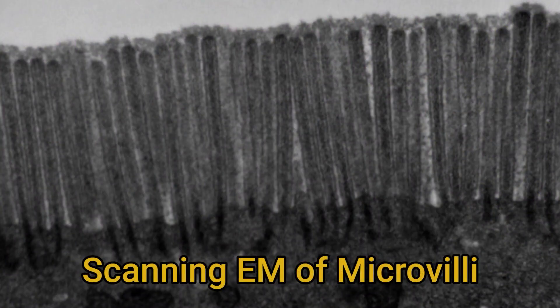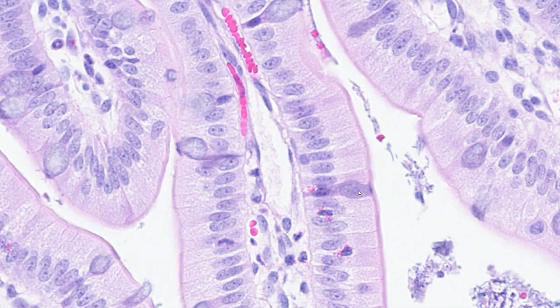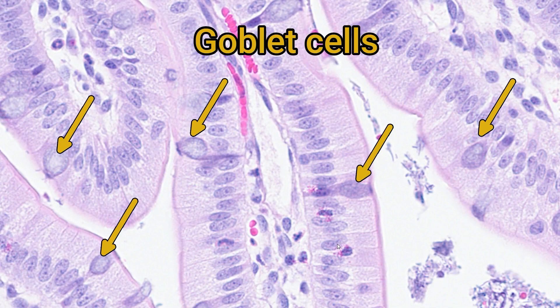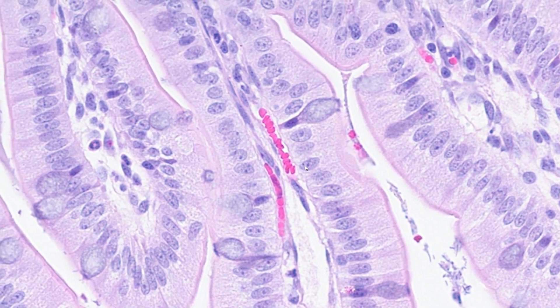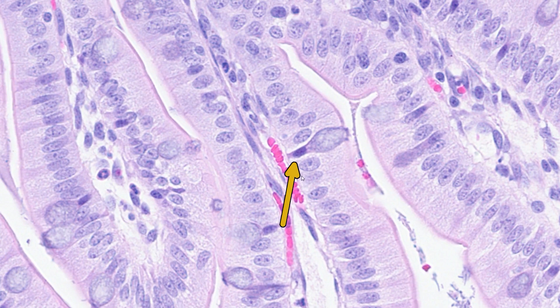The function of the brush border is to increase the surface area of the cell membrane so as much digestion and absorption can take place as possible. The other common cell type is the goblet cell. These are mucus-producing cells, identified because much of the cytoplasm is taken up by a slightly clearer bluish vacuole full of mucus. Below the vacuole there is a thin stem-like area going down to the nucleus, just like a wine glass or goblet — hence the cell's name.